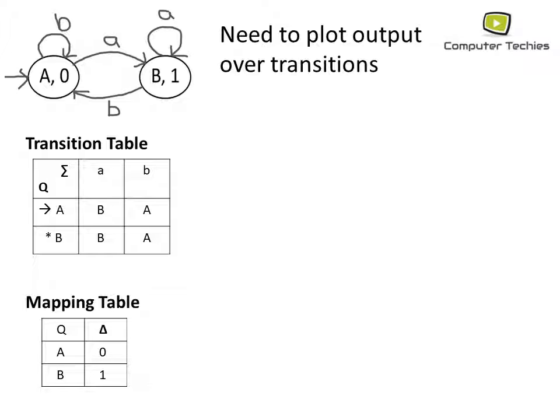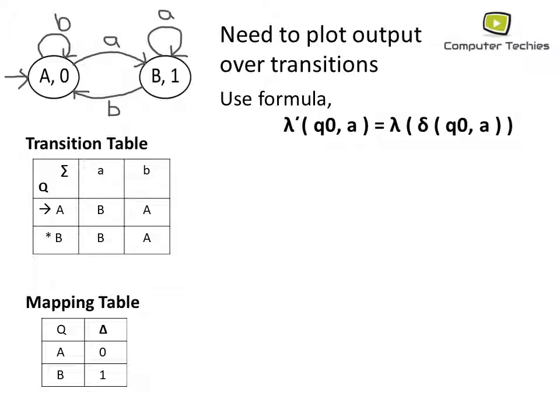We need to plot output over transitions. Using the formula: lambda-dash of delta of (q-naught, a) = lambda of delta of (q-naught, a). We use q-naught as the first state A. So lambda-dash of (A, a) = lambda of delta of (A, a), meaning: on input a, if we are on state A, what will be the output state and what output is embedded in that state?